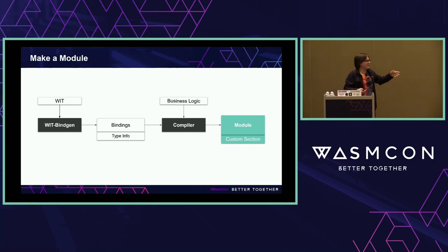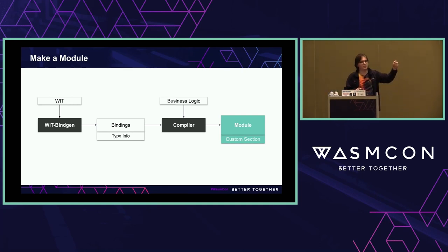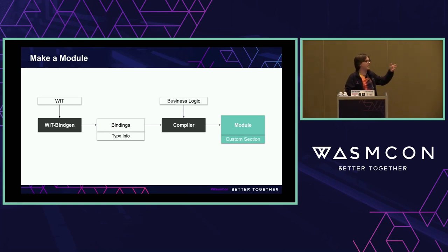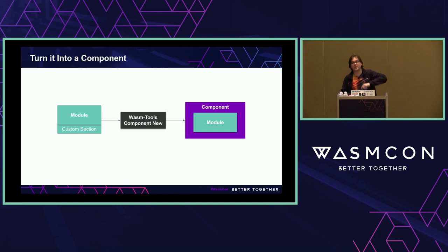The wit-bindgen method takes the WIT definition of your component, passes it into a bindings generator to create source language bindings for your component — whether C or Rust, you'll get those bindings — as well as embedding some information about the type of the component. Then when you combine that with your business logic and compile it through your compiler, you'll get a module with a custom section containing the type info. We have a tool, Wasm Tools Component New, that can take a module with this custom section and turn it into a component — it'll generate the lifts and lowers needed to adapt your module.